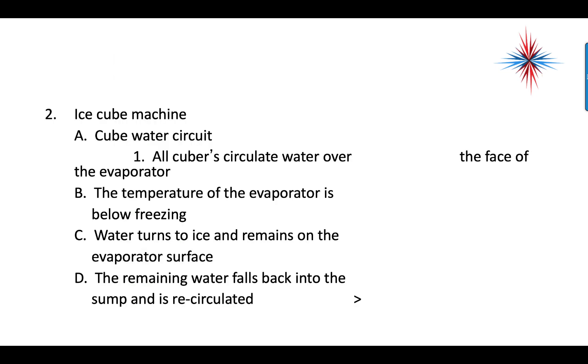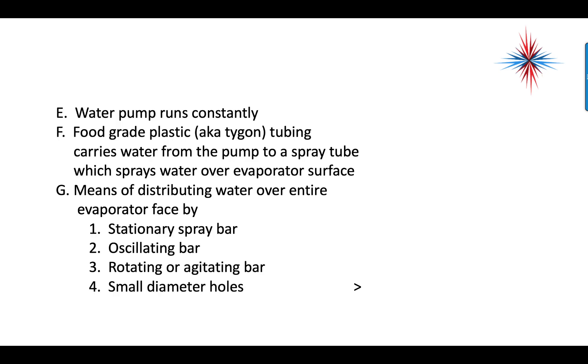The ice machine cuber water circuit - all cubers circulate water over the evaporator. The temperature of the evaporator is below freezing. Water turns to ice and remains on the evaporator's surface. The remaining water falls back into the sump and is recirculated. Water pumps run constantly. Food-grade plastic tubing carries the water from the pump to a spray tube, which sprays water over the evaporator surface.